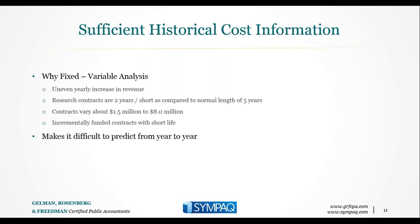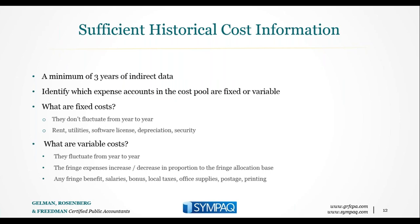As a reminder, there's a minimum of three years of indirect data required. We're going to identify in the cost pool — the numerator over the denominator — what costs are fixed and what are variable. Generally, fixed costs don't fluctuate. Things like rent, software licenses, and depreciation don't change much, and this is the unique thing for indirects: they don't change as they relate to the allocation base.